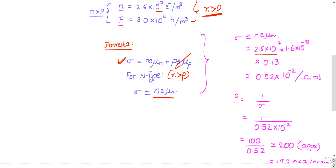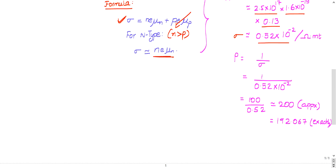You will get conductivity as 0.52×10^-2. This is the conductivity, but we want resistivity, which is the reciprocal of conductivity.